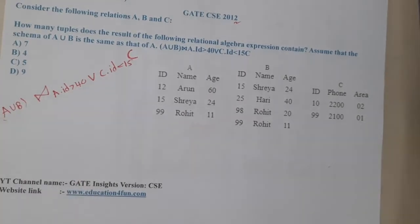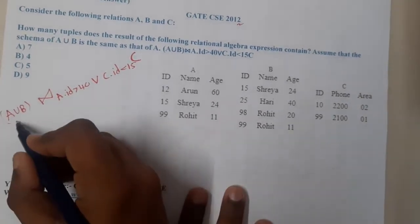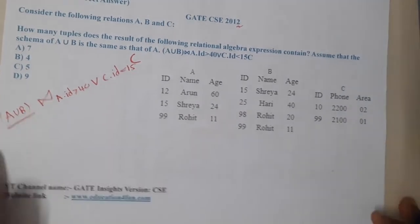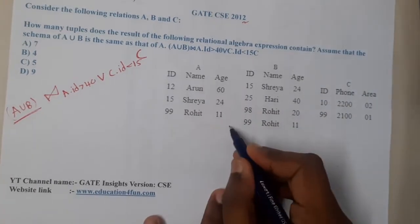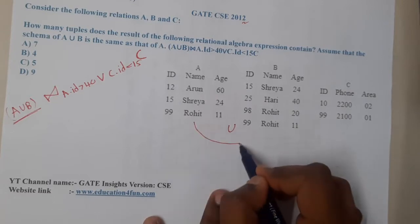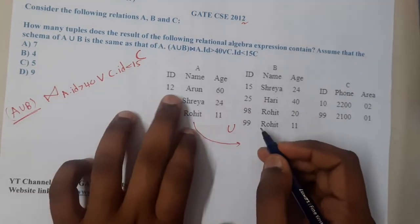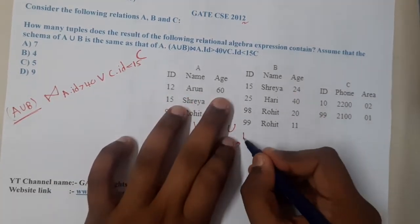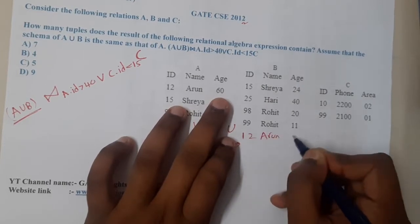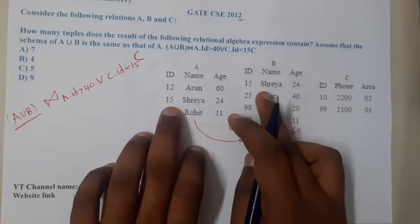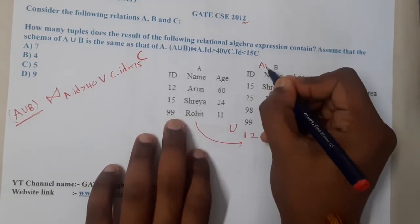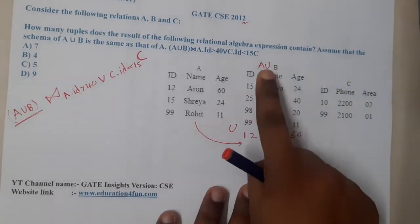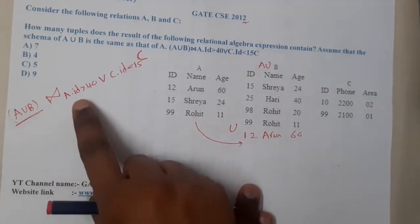Now moving on to the relational algebra query. This is a bit different — first we perform a union of A and B. In relational algebra there are no duplicates. The union result includes: 12 Arun 60 (added from B), 16 and 15 Shreya 24 (already present), 99 Rohit 11 (already present). So A union B gives us these combined tuples.